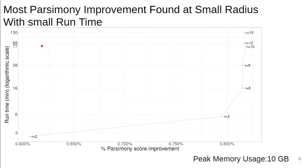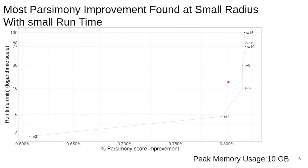Runtime versus parsimony score improvement at different search radii is plotted here. The labels around each data point are the search radius. Note that the runtime axis is in logarithmic scale. matOptimize can achieve most of the parsimony improvement at a small radius. However, parsimony does not improve monotonously with larger radius, because longer-distance moves are more likely to conflict with other moves. Therefore, if the radius is too large, some optimization opportunity may be missed.